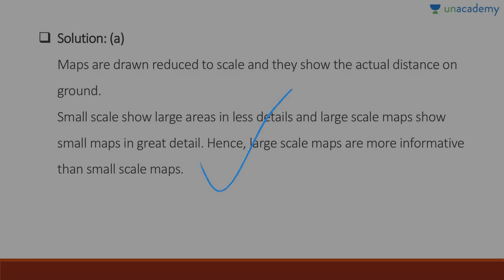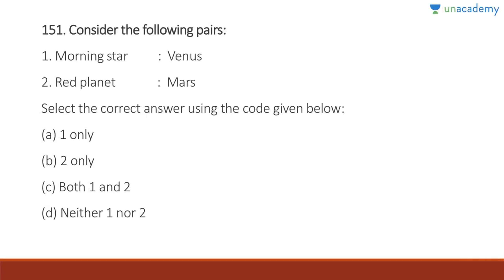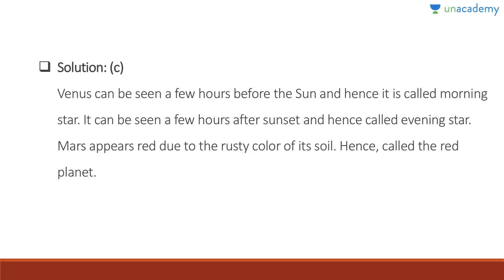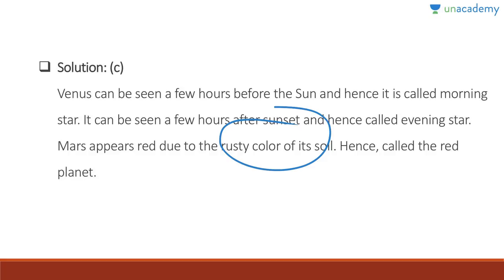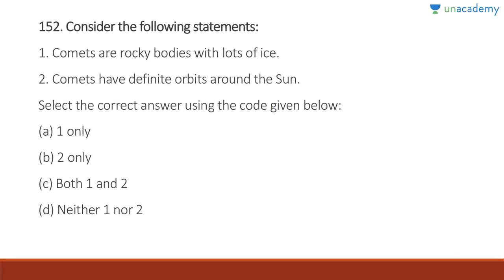Question 151: Morning star is Venus — correct. Red planet is Mars — also correct. Answer is C, both one and two. Venus can be seen a few hours before sunset and after sunset — since it is seen before sunrise it is called the morning star, and since it can be seen after sunset it is also called the evening star. Mars appears red because of the rusty color of its soil, hence it is called the red planet.